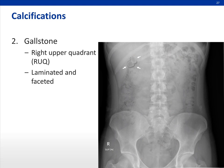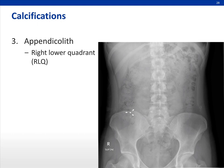Gallstones are found in the right upper quadrant. They tend to be multiple, laminated, and faceted in appearance. Sometimes, but not often, we can identify an appendicolith, especially in the correct clinical setting. It is usually in the right lower quadrant where the appendix is.